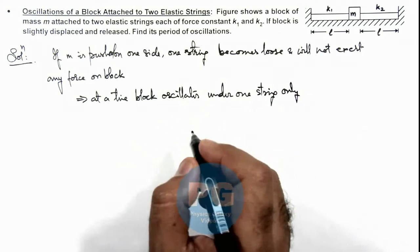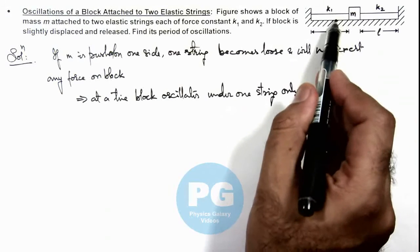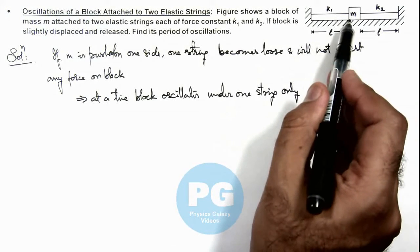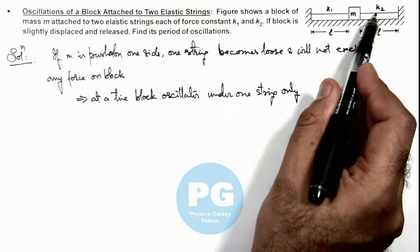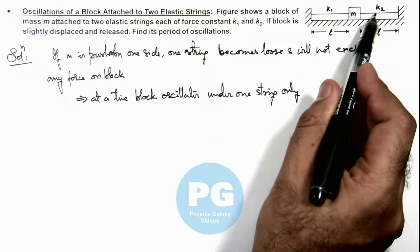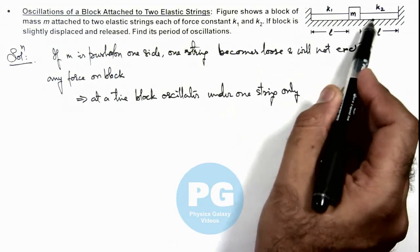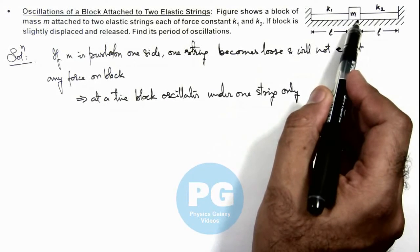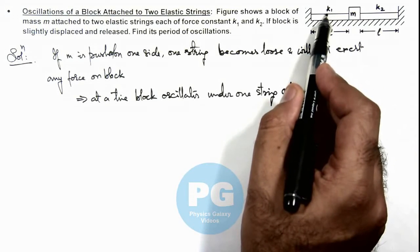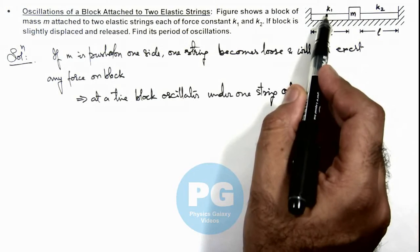So for the left half of oscillations, its oscillations are due to the string having force constant k2. And when it'll be oscillating toward the right half, it'll be oscillating under the influence of the string having constant k1.